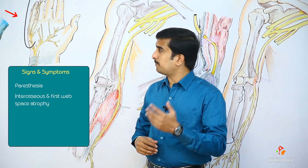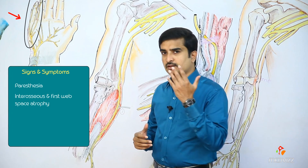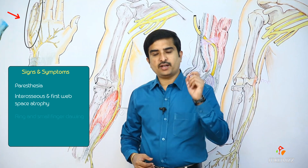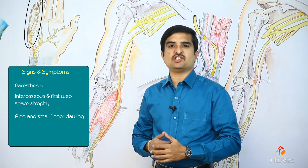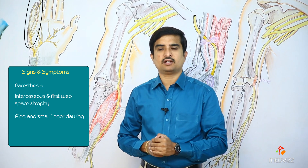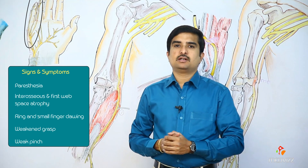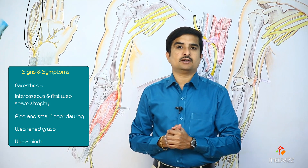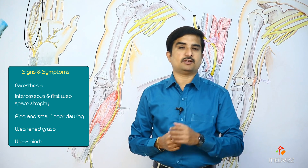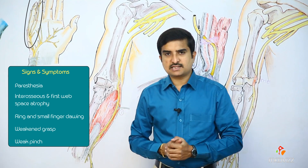According to the ulnar nerve supply to the ring finger (ulnar half) and the little finger, ring and small finger clawing is mainly seen, which is a characteristic feature. Weakened grasp and weak pinch occur mainly due to loss of thumb adduction — as much as 70 percent of pinch strength is lost.